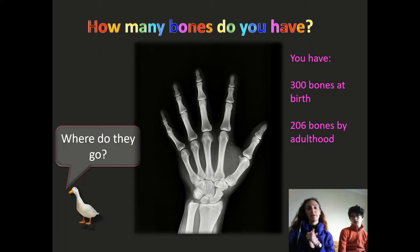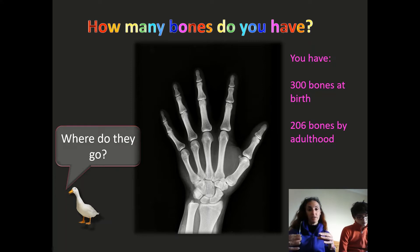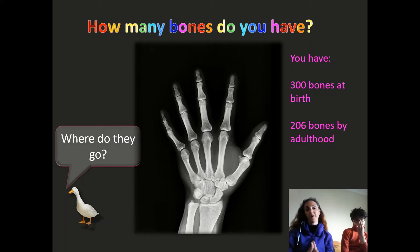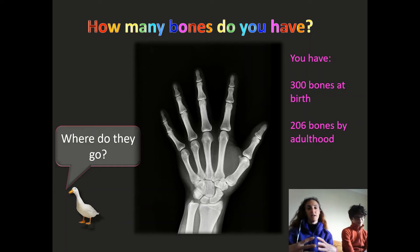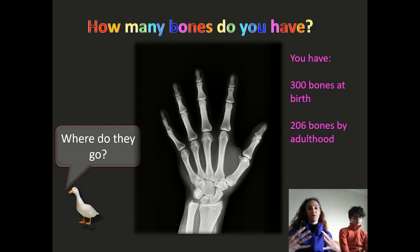When babies reach about 18 months old, the bones in their skull will have fused together and they will no longer have that soft spot. So the answer — because that duck wants to know — is that the bones fuse together and they combine to form larger bones.